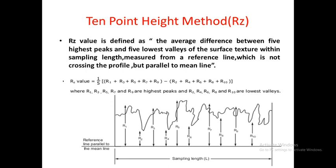To determine the roughness value using the 10-point height method, that is the Rz value, we first take a particular sampling length of the workpiece on which we have to determine the surface roughness. In the 10-point height method, we determine the values of the five highest peaks and the five lowest values — for example R1, R3, R5, R7, R9 — which are the values of the five highest peaks from the reference line parallel to the main line.